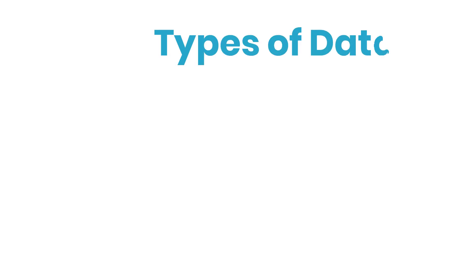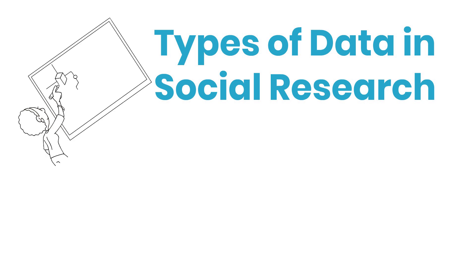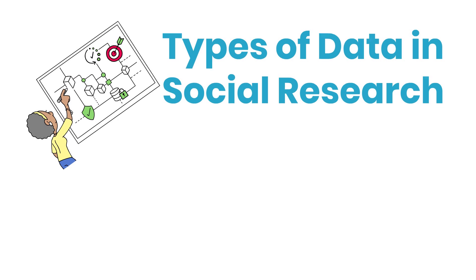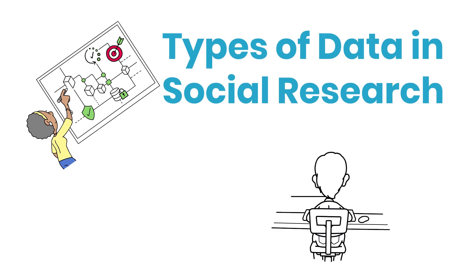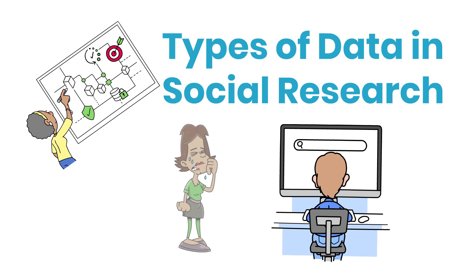In this video, we'll learn about types of data in social research. Social research relies on various types of data to understand human behavior, social phenomena, and societal trends. Researchers use different data collection methods and analyze diverse data types to gain insights into complex social issues.